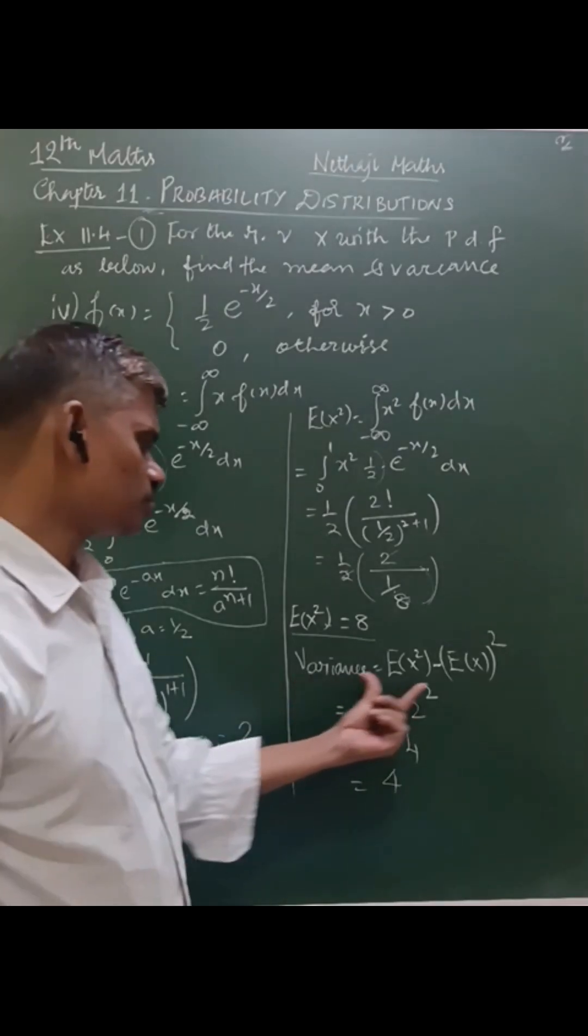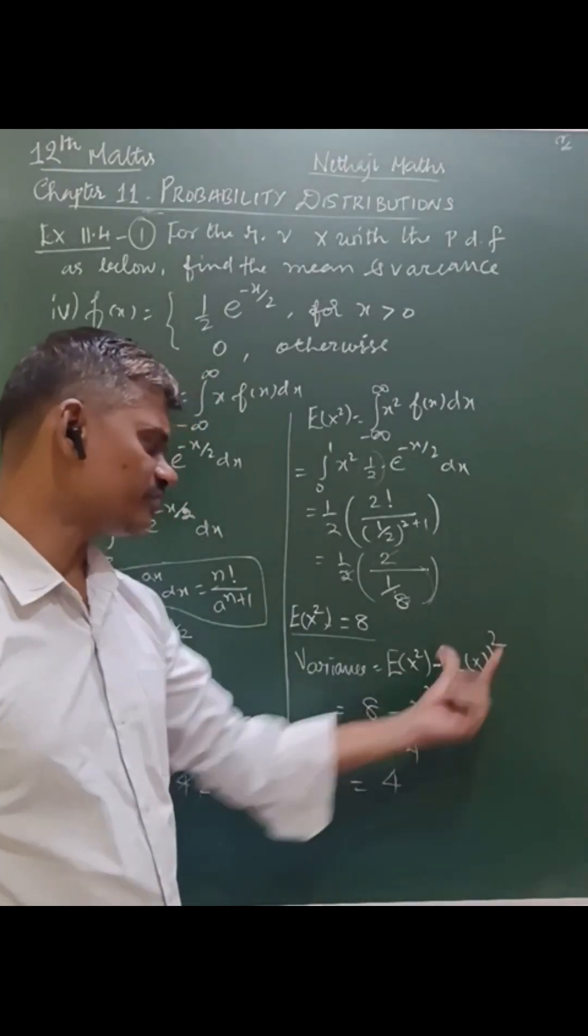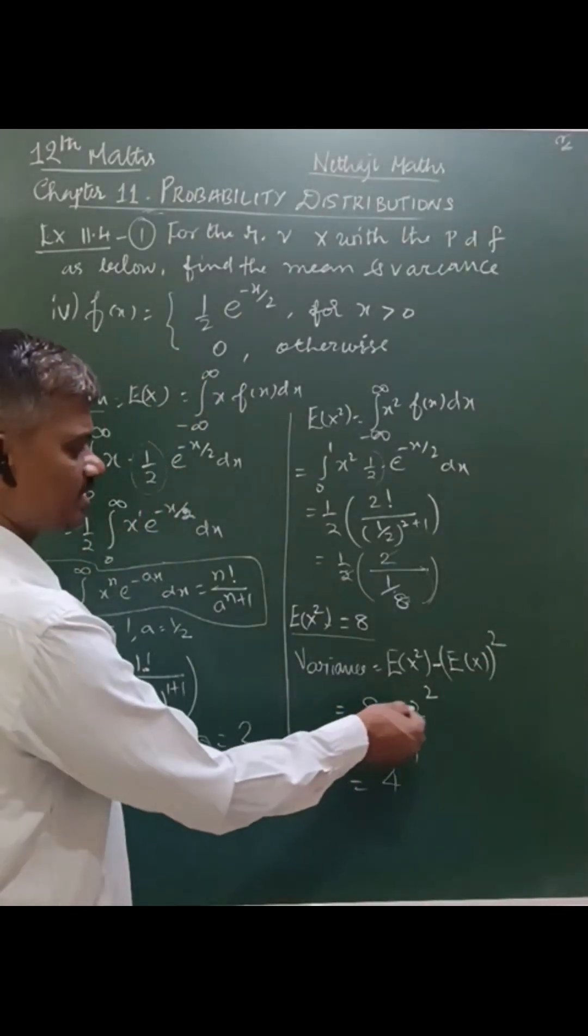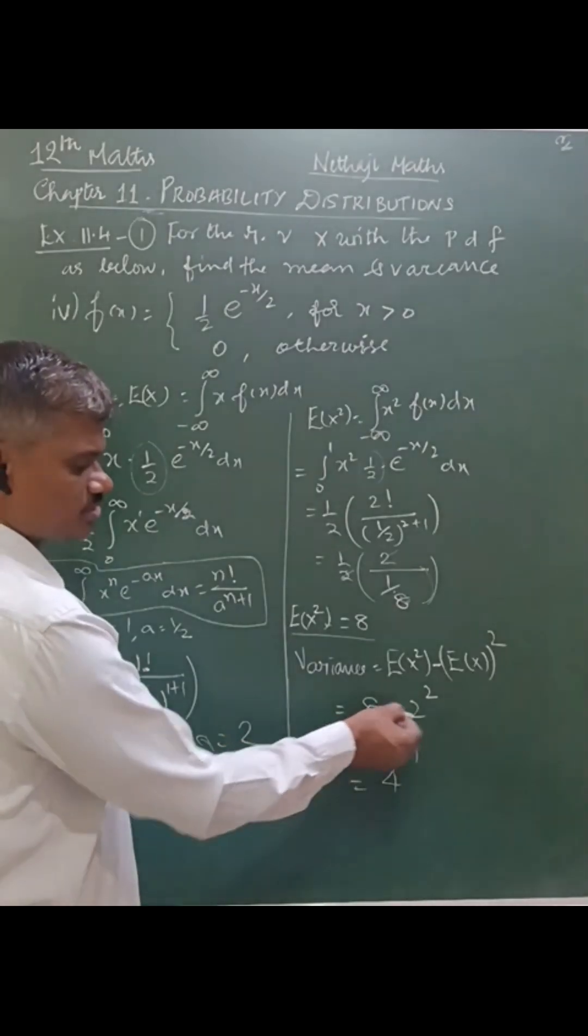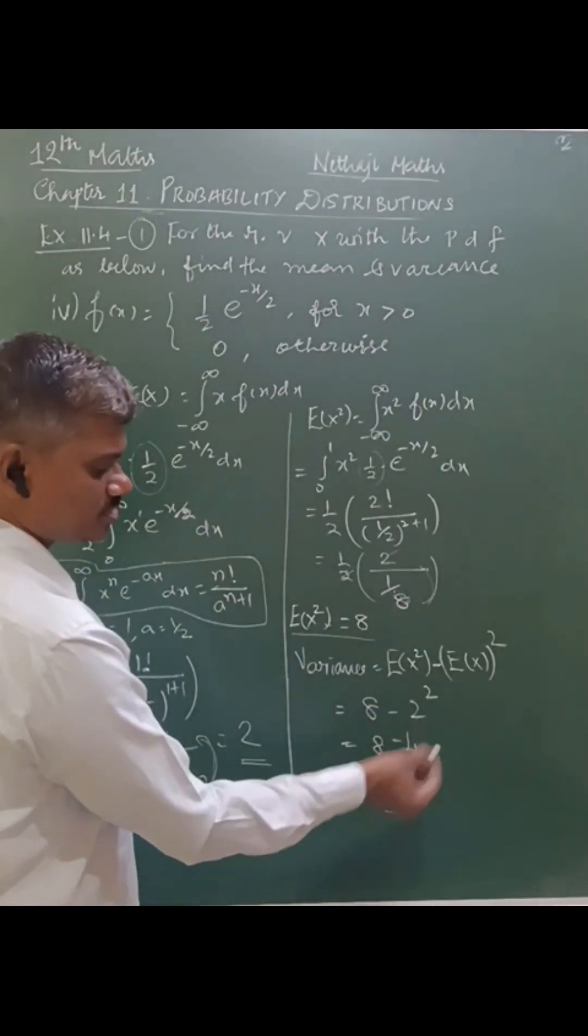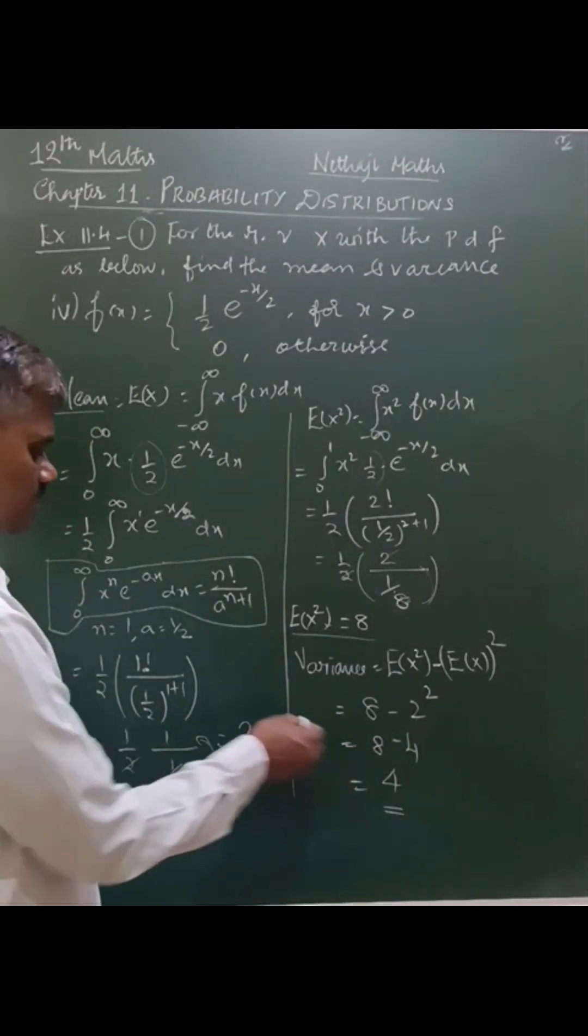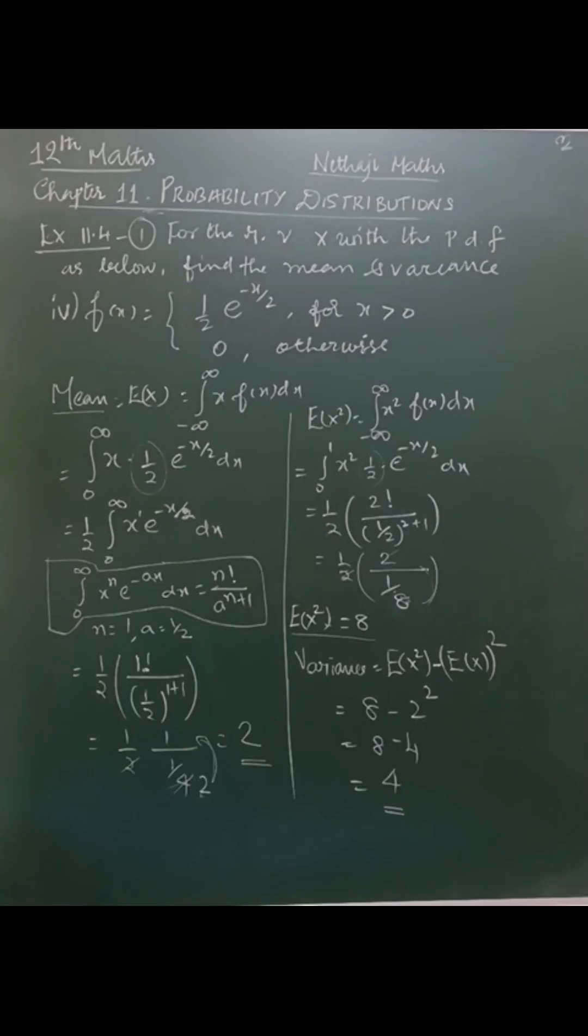Now find the variance using the formula E(x squared) minus E(x) whole squared. That is 8 minus 2 squared, which is 8 minus 4, giving 4. This is the variance and 2 is the mean. That's all, thank you.